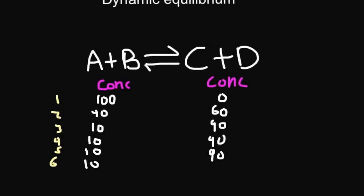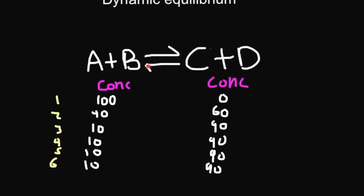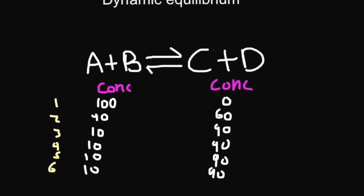Another minute: 10 of A, 90 of C. In fact, if we left this for a few days or hours, it doesn't matter — we're still going to have 10 of A and 90 of C. So at dynamic equilibrium, one of the key points is that the concentration does not change. The other key point is that the reaction is still going on, except the forward rate and the backward rate are occurring at the same speed.